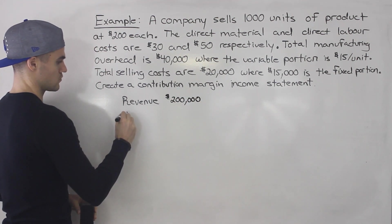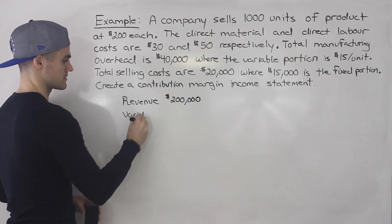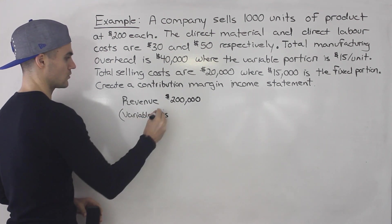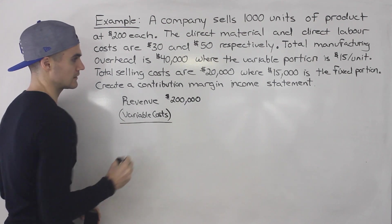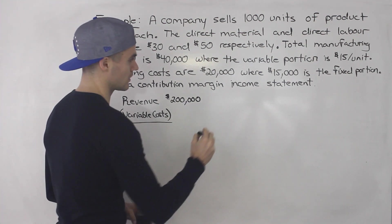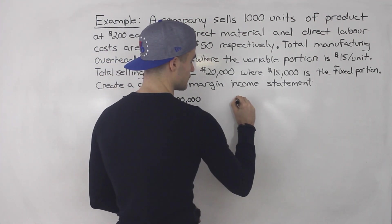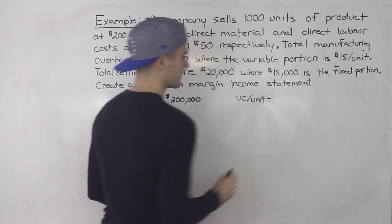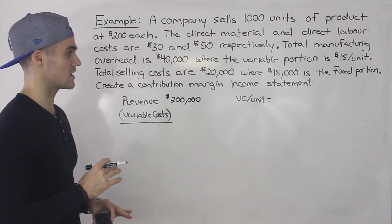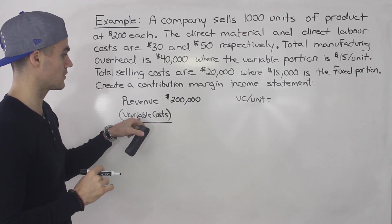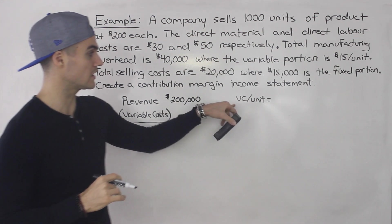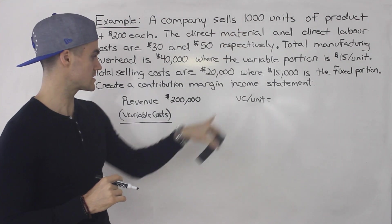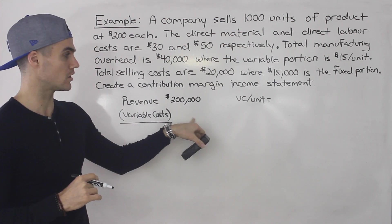Then we're going to subtract the total variable costs. Let's do some work on the side to find what the variable cost per unit is going to be. That's usually the first step — if you get the variable cost per unit, you just multiply it by 1,000 units and that gives you your total variable cost.